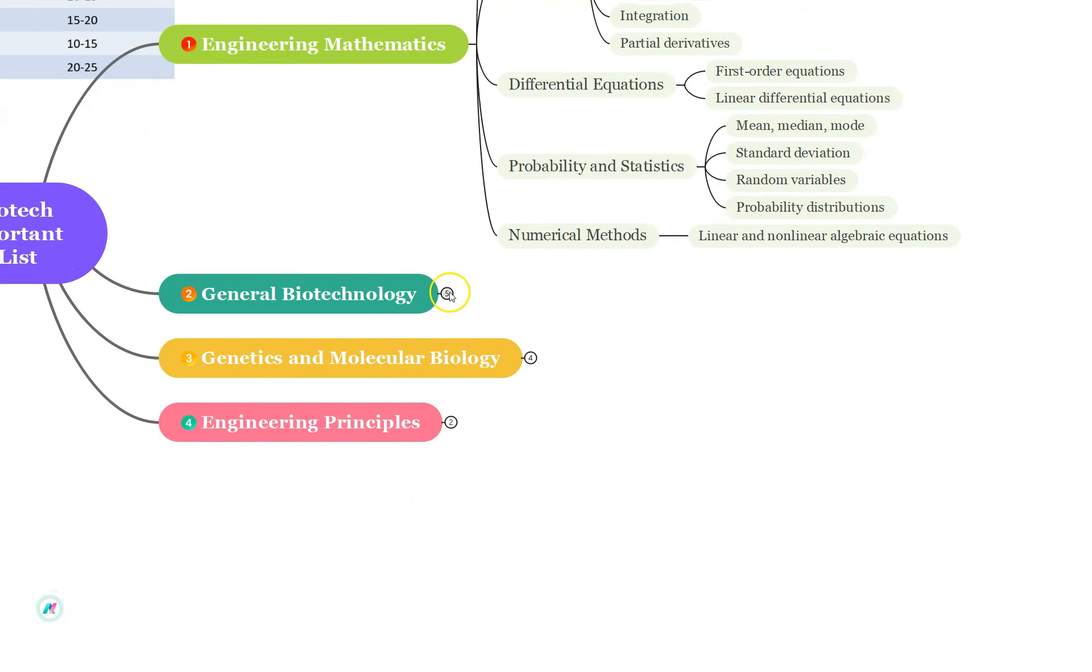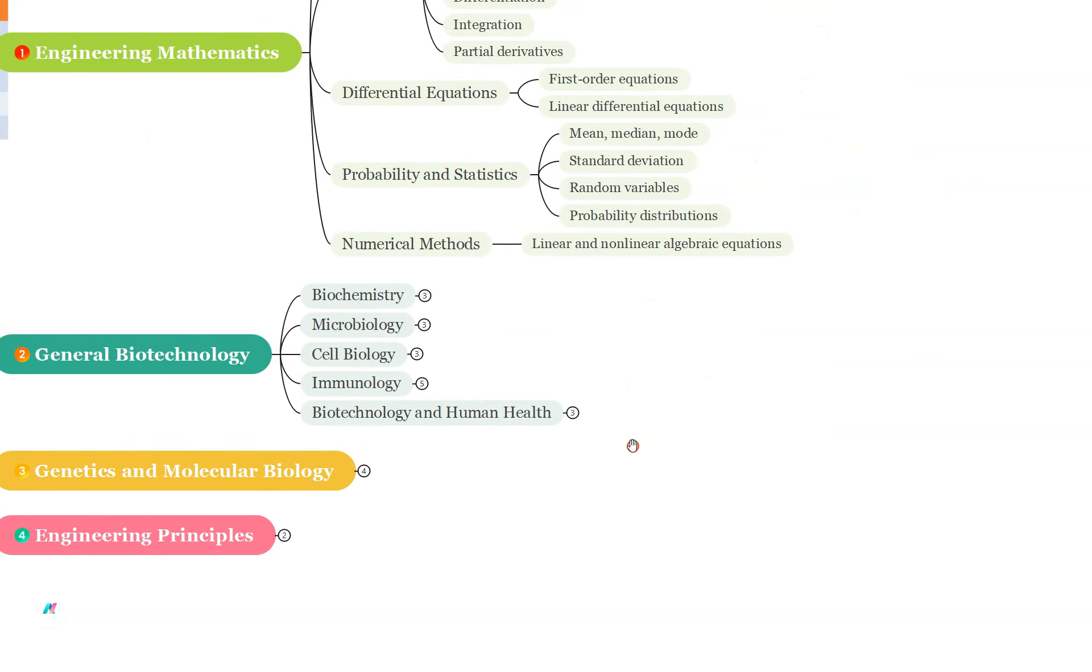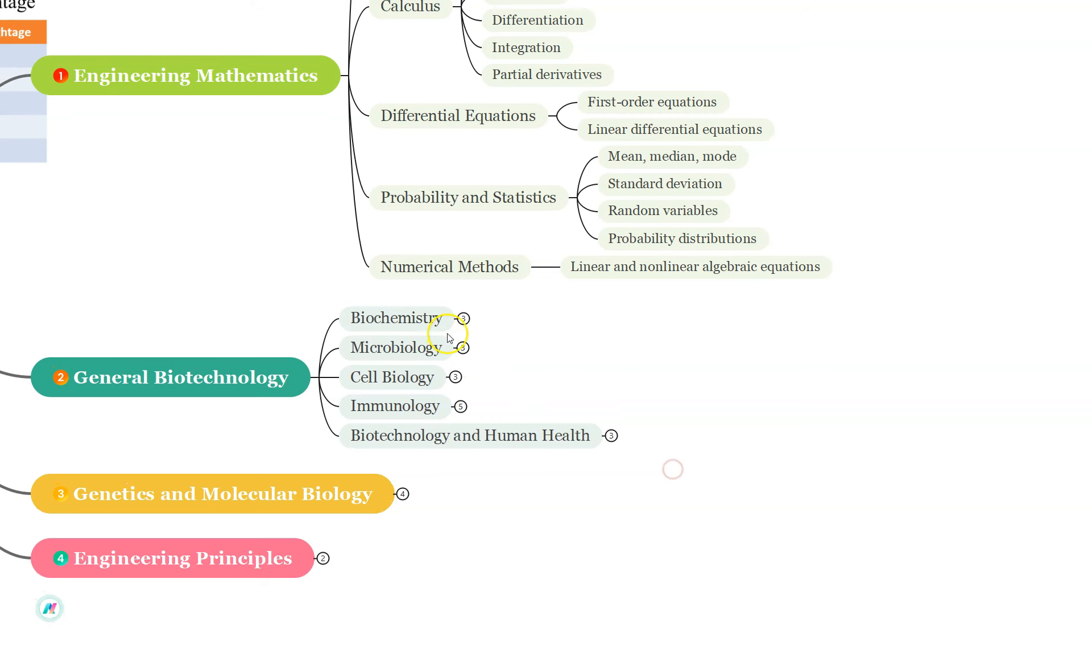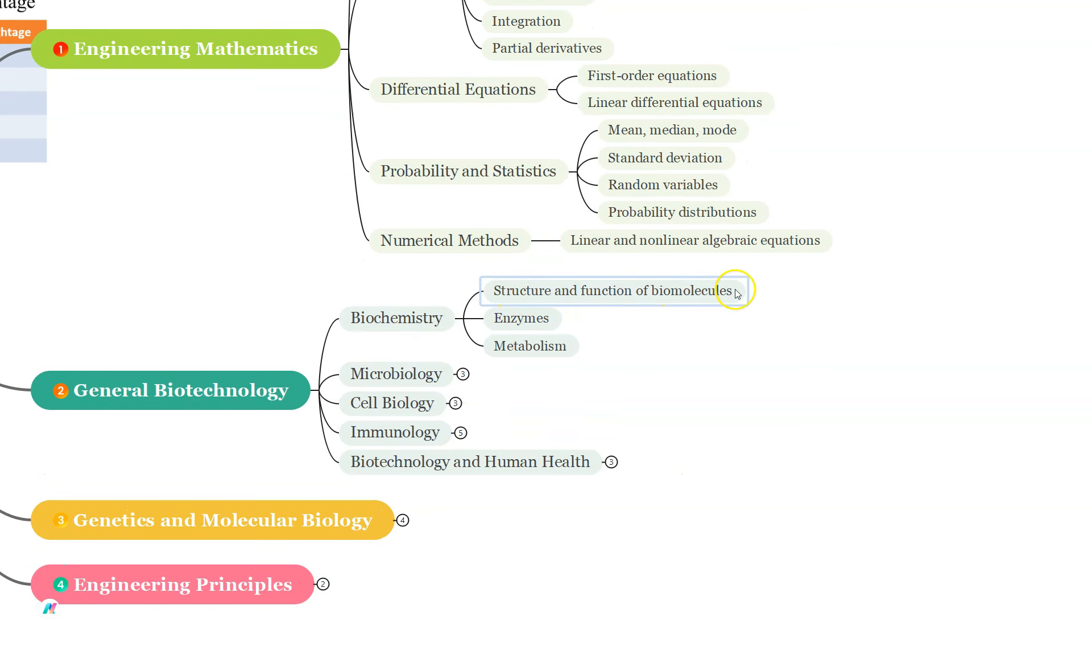Next unit from General Biotechnology, we have various subjects under that. From Biochemistry, the structure and function of biomolecules: Amino acids, proteins, carbohydrates, lipids and vitamins are frequently asked.